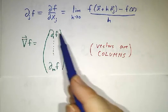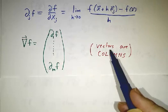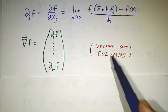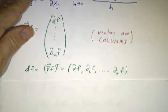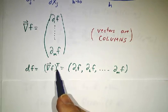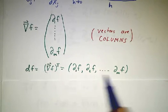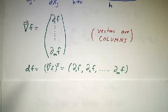And by the way, why am I writing this as a column? Because vectors are columns. If you want a row, that's the transpose of the gradient, which is convenient to have, and we'll call that df.